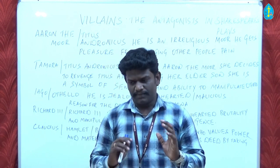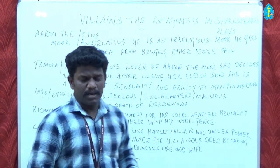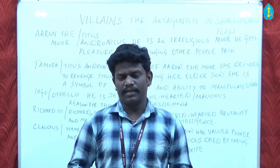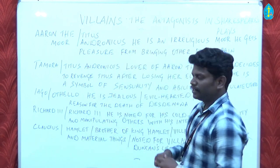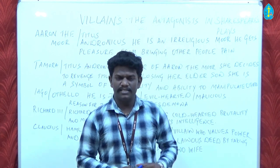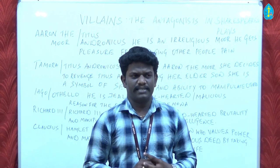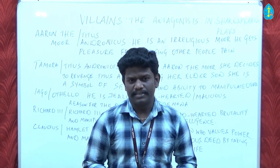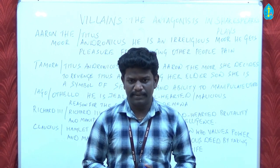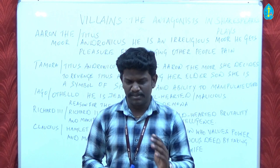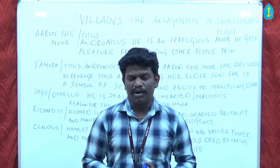The first character is the name called Aaron the Moor. Who is Aaron the Moor? Aaron the Moor comes from the play called Titus Andronicus. He is an irreligious moor. Irreligious moor means who is not cultivated, who is not cultured, just like uncultivated land. If a land is there which is uncultivated, that particular land could not be used for any purposes. Similarly, this particular man is uncultured, who is not properly cultured.